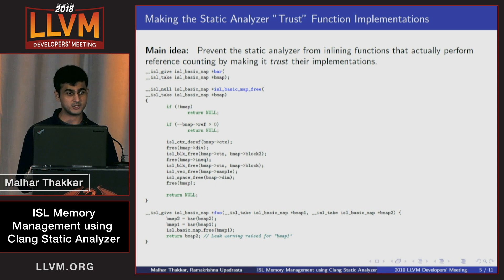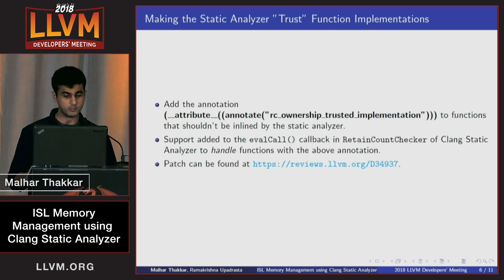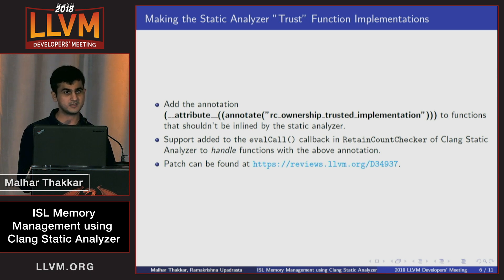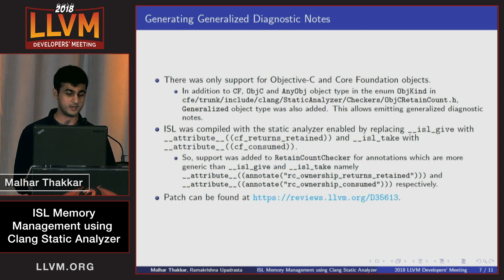When the isl_basic_map_free function is called, it decrements the reference count as far as ISL's semantics are concerned, but the Clang static analyzer is unable to see that and raises a leak warning. So what we did was add the annotation RC_OWNERSHIP_TRUSTED_IMPLEMENTATION in front of such functions that perform memory management. We added support to the Clang static analyzer to trust functions with these annotations so it doesn't inline them, and the leak warnings went away.